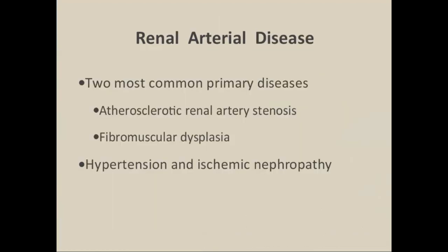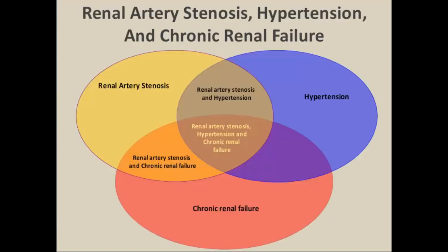The two most common primary renal arterial diseases are atherosclerosis — by far the most common, accounting for about 90% of all renal arterial disease — and fibromuscular dysplasia. Both are associated with renal artery stenosis, hypertension, and ischemic nephropathy. These three conditions can occur alone but have significant overlap, which is one reason we explore the diagnosis of renal artery stenosis.